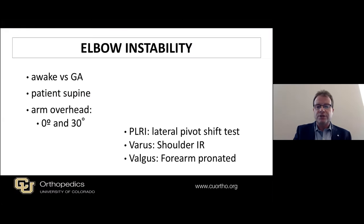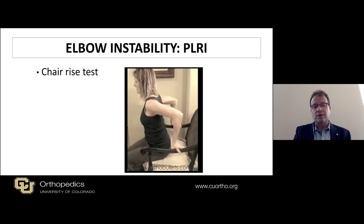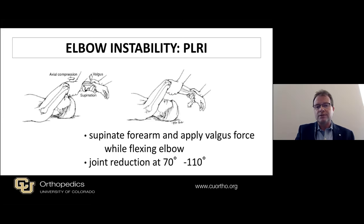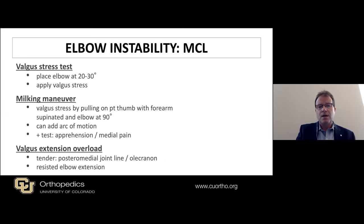For elbow instability, pivot shift tests help find subtle instabilities. Sometimes we have to examine patients under a block or general anesthesia to relax muscle resistance. Patients with posterolateral rotational instability typically don't like to push off — such as in a chair-raise test — and don't like stress tests applying a valgus force while flexing the elbow, with the joint actually reducing at 70 to 110 degrees. For the MCL, the valgus stress test, milking maneuver, and valgus extension overload in a repetitive throwing athlete may reveal posteromedial joint line pain at the olecranon-humeral joint, sometimes with degenerative changes or early osteophyte formation, aggravated with resisted elbow extension.